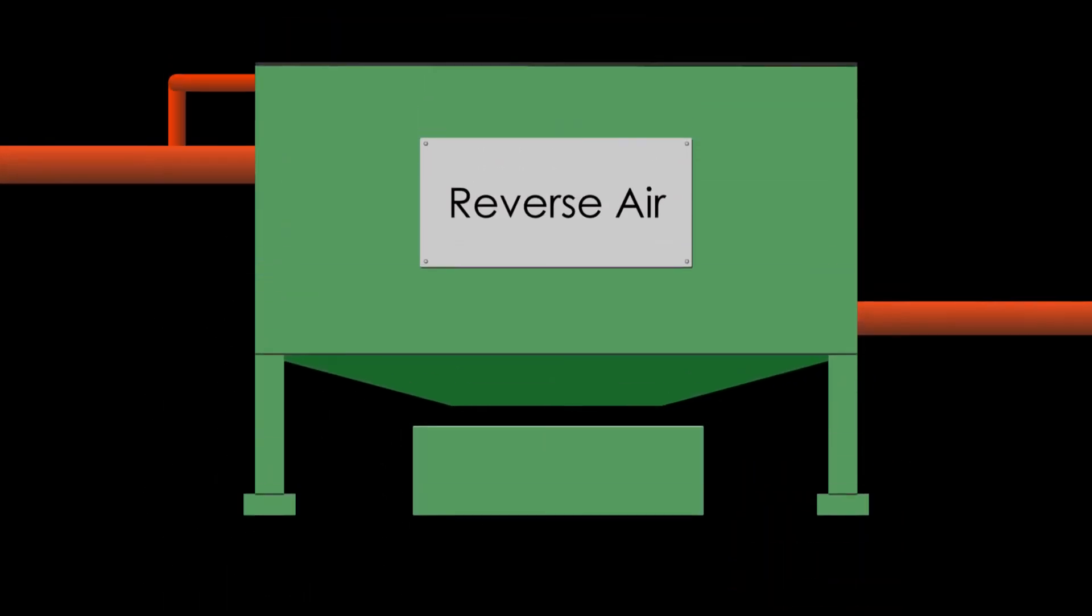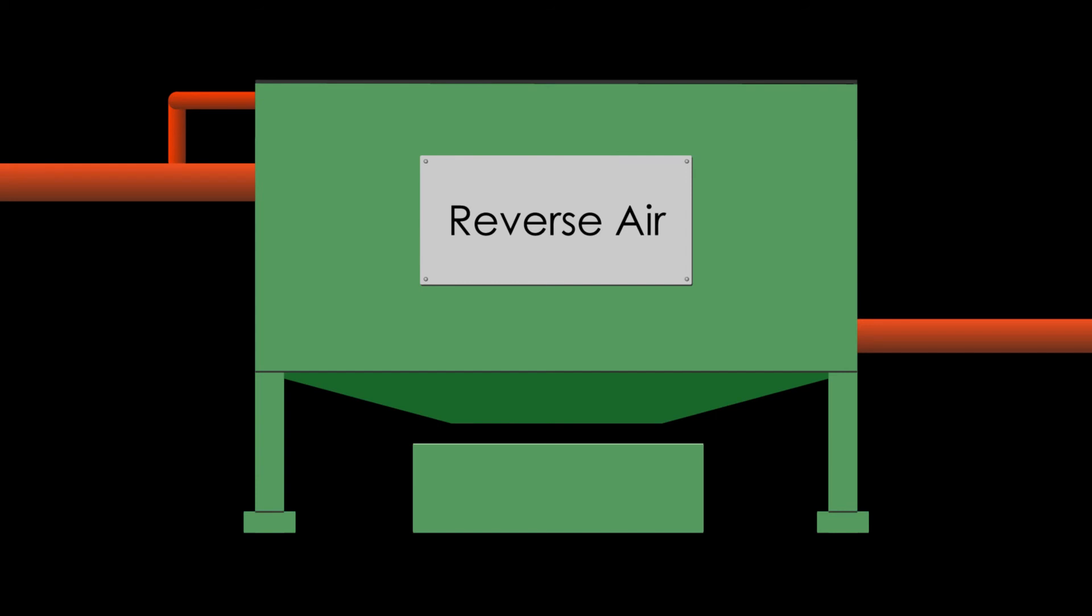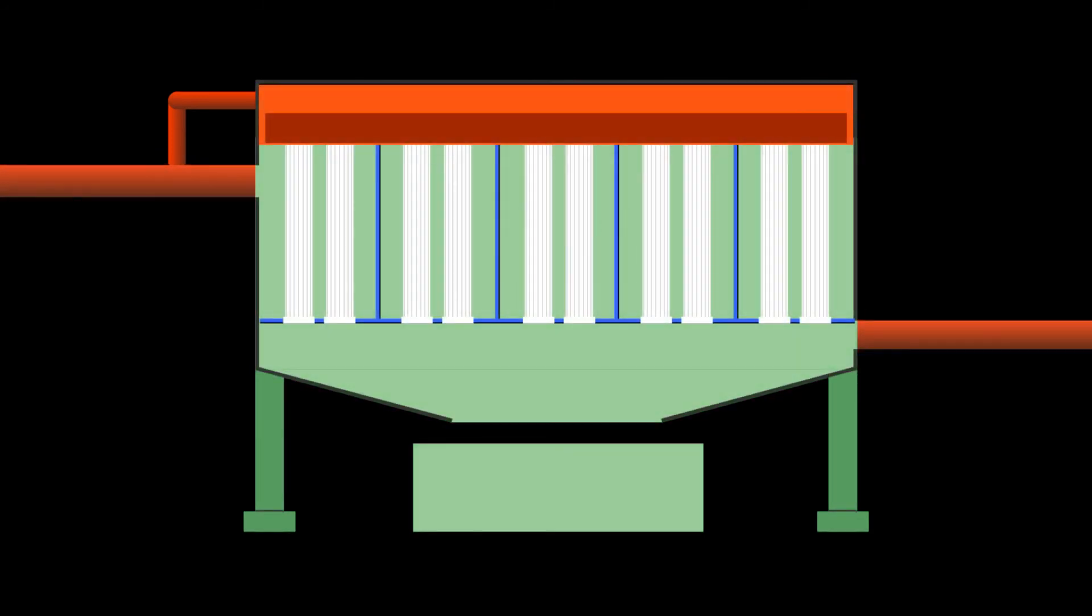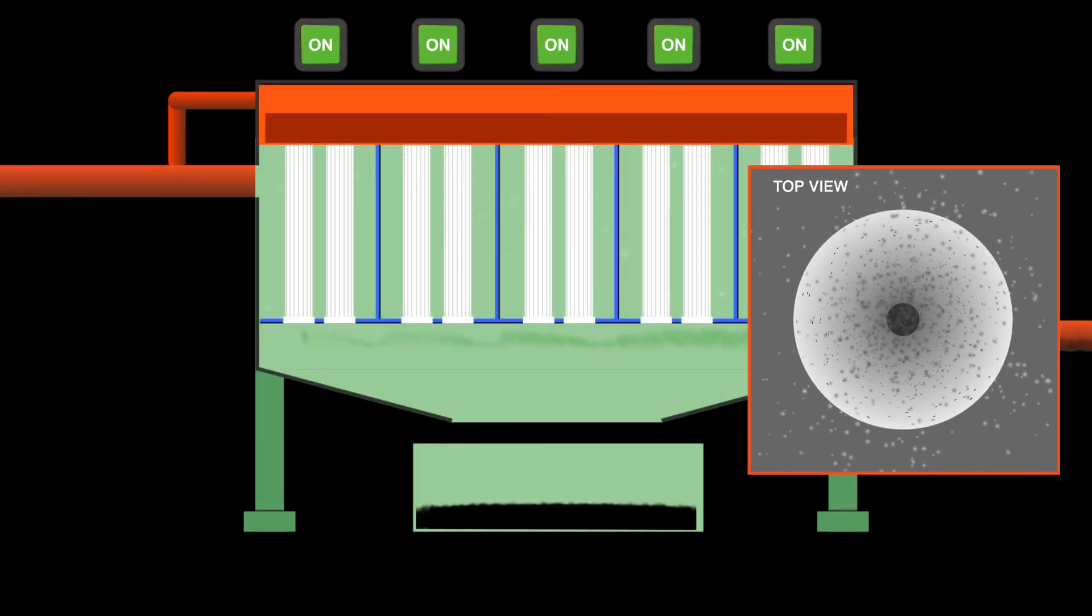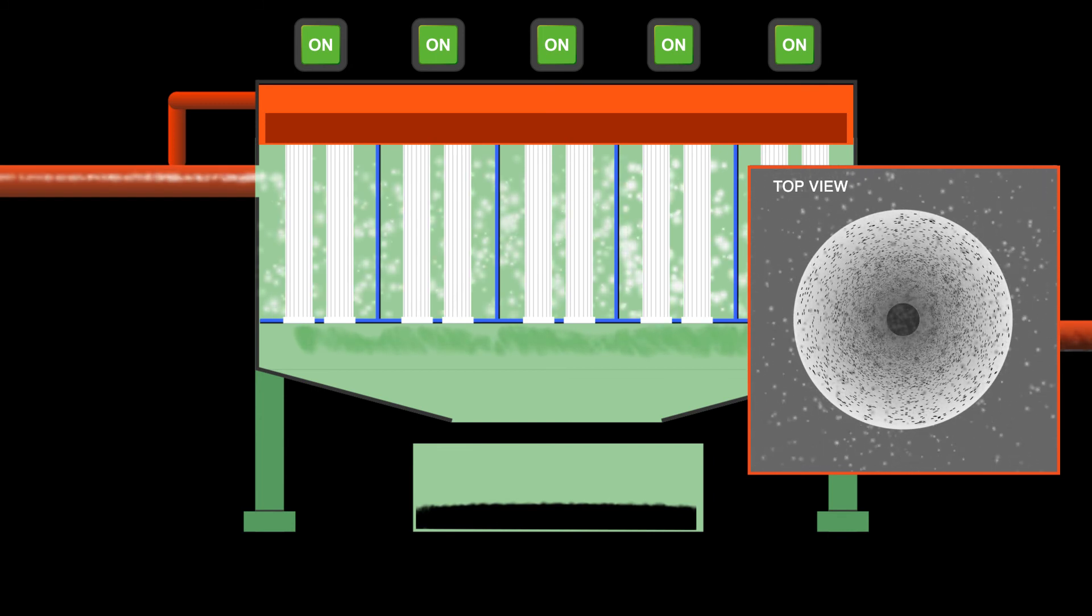An older type of baghouse also known in the industry as a reverse air is often seen with a rectangular housing and multi-compartments. Like a shaker unit, in this style dust collects on the interior of the bags as the air flow rises.